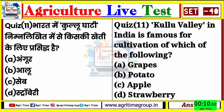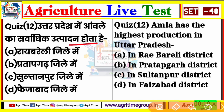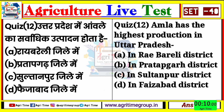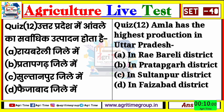Question number 12 ये रहा आपके screen पर - उत्तरप्रदेश में आँवले का सर्वाधिक उत्पादन किस जिले में होता है? Amla has the highest production in Uttar Pradesh in which district? Options: रायबरेली जिले में, प्रतापगढ़ में, सुल्तानपुर जिले में, या फिर फैजाबाद जिले में। Quiz number 12 का right answer होगा option number B, यानि कि प्रतापगढ़ जिला - यहाँ पे आँवले का सर्वाधिक उत्पादन होता है उत्तरप्रदेश के।